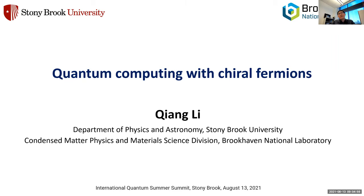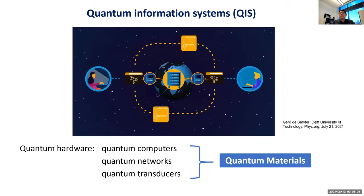Let me start with this cartoon. Here are Alice and Bob communicating in quantum space. To enable this, you need quantum hardware — quantum computers, quantum networks, and quantum transducers. Quantum transducers pass quantum information between different modalities. For instance, if computers operate at gigahertz and networks operate at optical frequencies, you need frequency conversion without losing information.